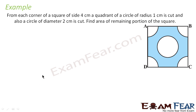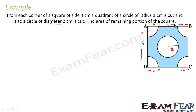Let's take one more example. From a square, each corner of radius 1 centimeter is cut. We also have a bigger circle of diameter 2 centimeter, so radius is 1. All radii are 1. The whole square has dimension 4 centimeter. We have to find the area of the remaining portion. The area of the shaded region: take the whole area of the square first, then subtract areas 1, 2, 3, 4, and 5.